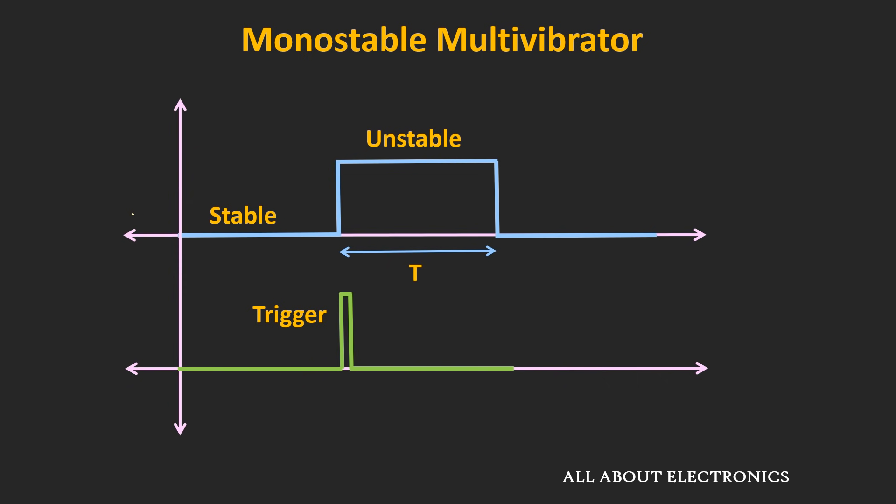So here, let's say 0V is the stable state of this multivibrator and 5V is the unstable state. And similarly, exactly opposite is also possible. Let's say 5V is the stable state of this multivibrator, and whenever some triggering action occurs, then the output goes into the unstable state, and let's say that is equal to 0V.